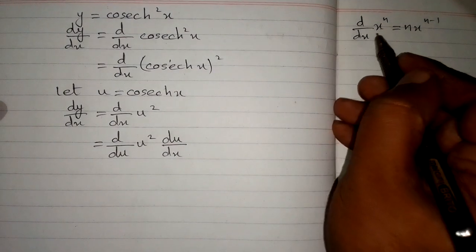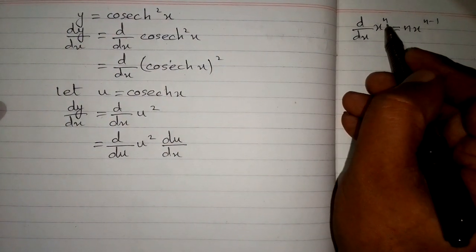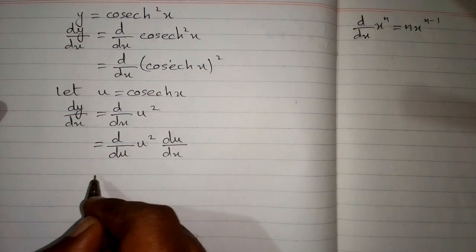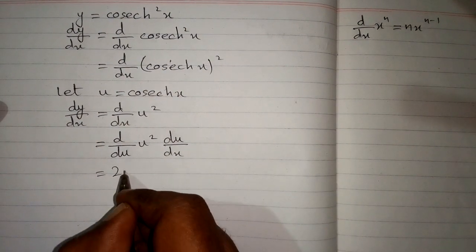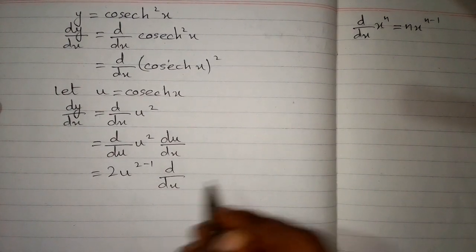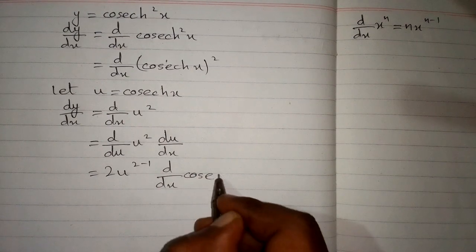Now we can apply this formula and we can see that we have 2 in place of n. So we will put 2 over here and over here. So we have 2 times u to the power 2 minus 1 multiplied by the derivative of u which is hyperbolic cosec x.